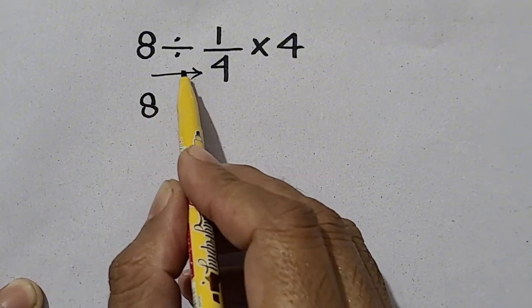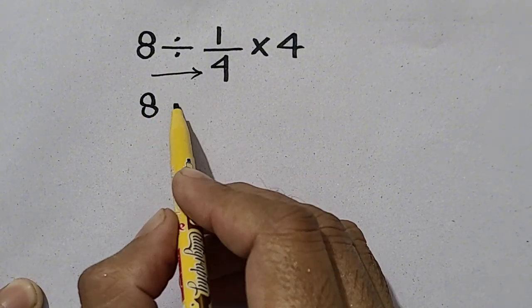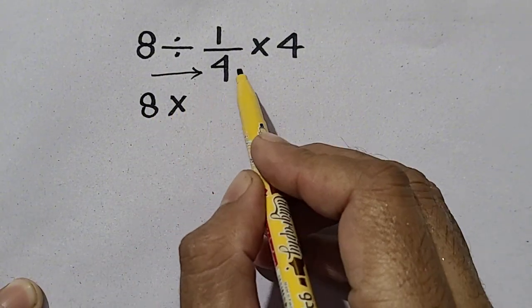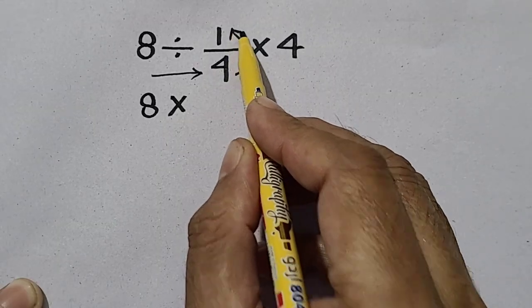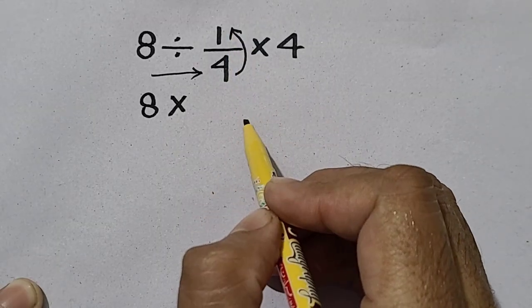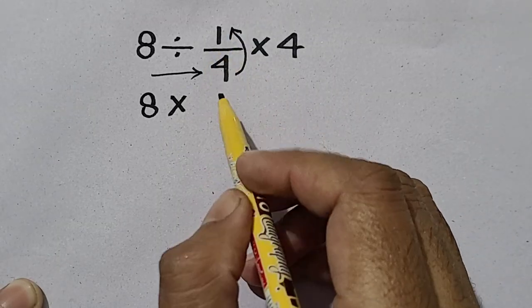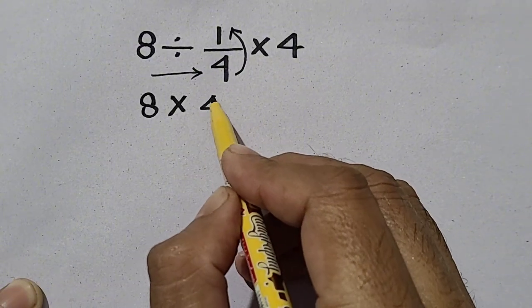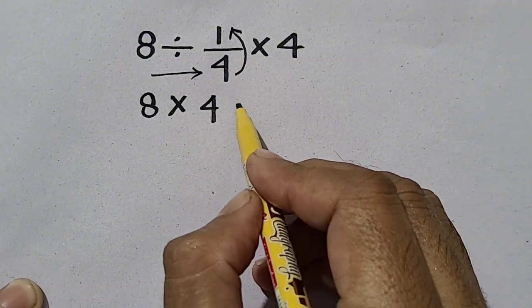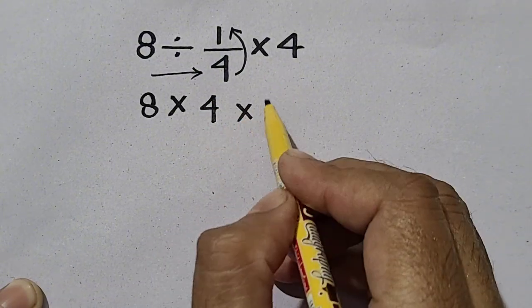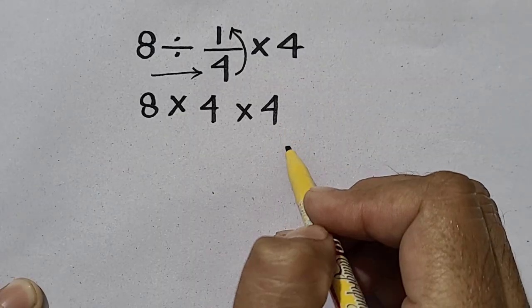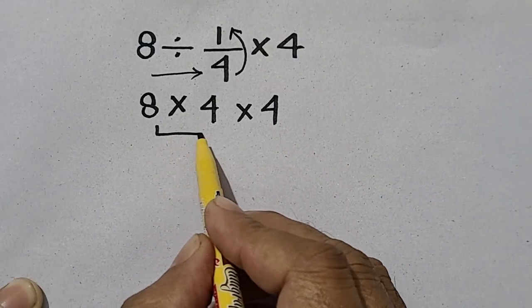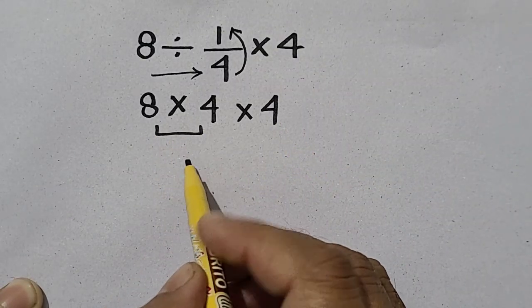The division sign is converted into multiplication and we have to flip this fraction, so 1/4 becomes 4 over 1, which is simply 4. And here we also have 4. Now 8 times 4 will be...